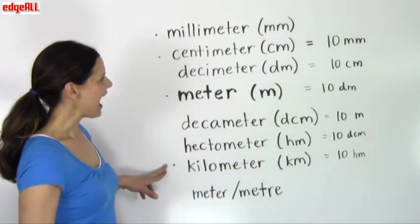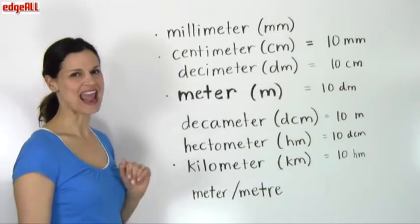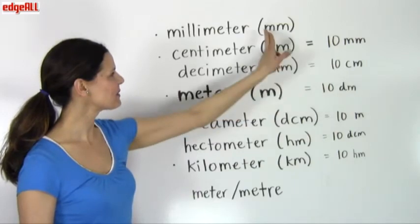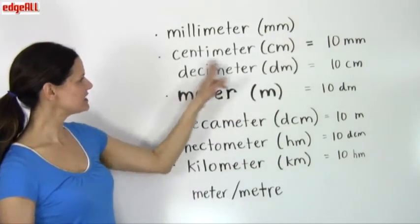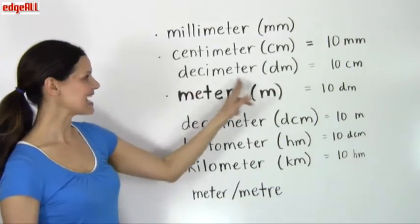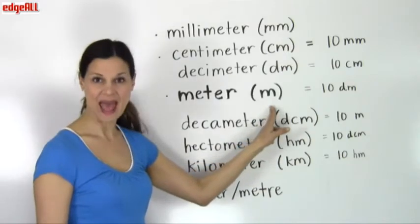They all also have an abbreviated version of these longer names. So for millimeter, we have simply two M's. Millimeter. For centimeter, you'll see CM. For decimeter, DM. For meter, simply an M.